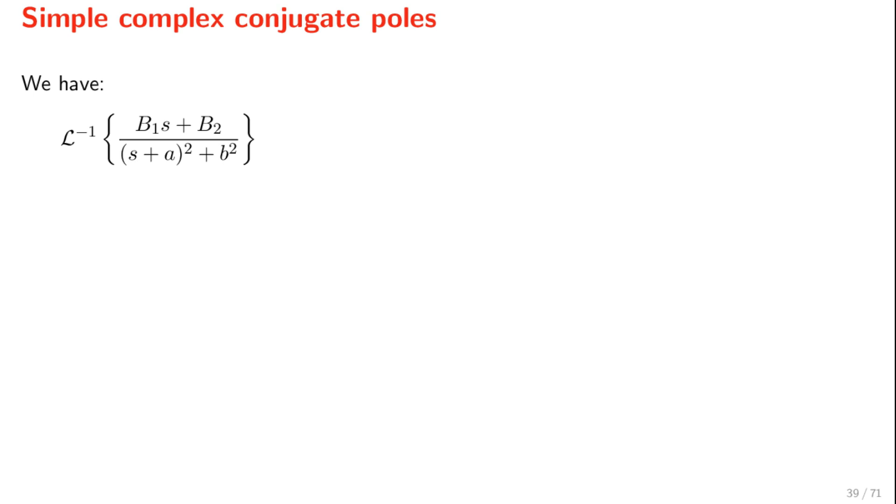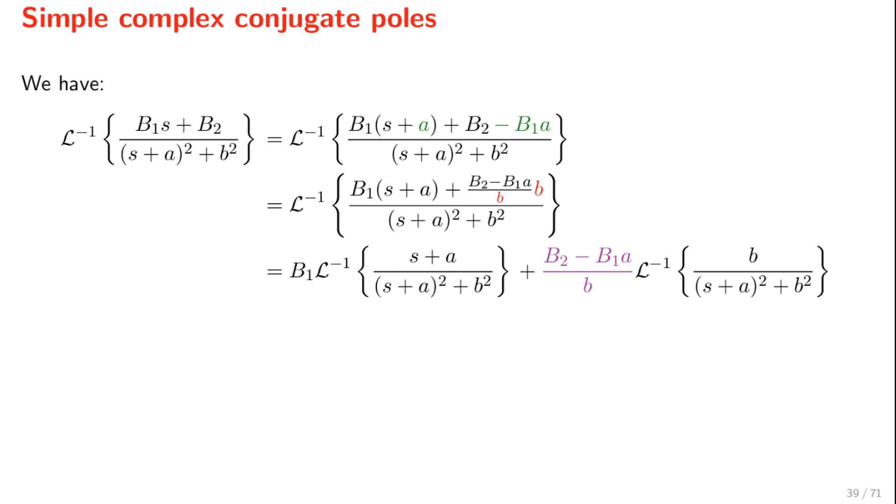We mentioned that pairs of complex conjugate poles give rise to terms like that in their partial fractions expansion. In order to determine their inverse Laplace transform, we need to make s plus a and b somehow show up in the numerator. For that purpose, we start by adding and subtracting a, and then multiplying and dividing by b.